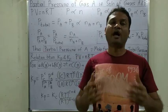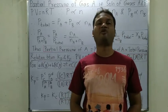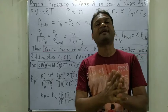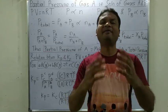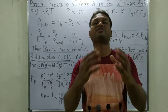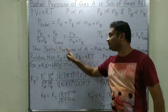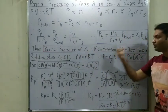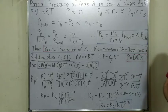Let us now revise what is partial pressure of a gas. We have already written about thermodynamics in the gaseous state, but I will just revise and derive the formula once again. The formula for partial pressure of gas A is: mole fraction of gas A into total pressure.